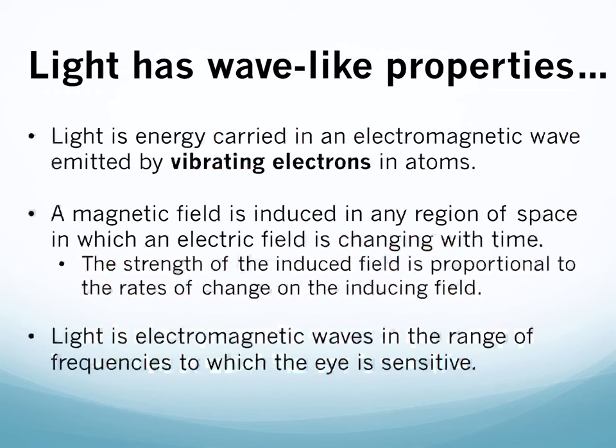Light is energy carried in this electromagnetic wave. We call them electromagnetic waves because they have both electrical and magnetic properties. We're mostly going to deal with the electrical properties in this class. These waves are being emitted by vibrating electrons in atoms. When an atom absorbs energy it can promote an electron to a higher energy level, and when that energy is released, it comes out as colored light — which is what you may have seen in the flame test lab.